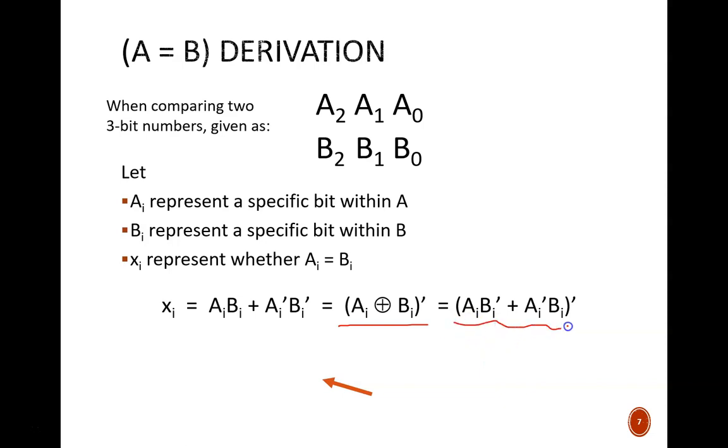But why care about defining X at all? Well, even though X is an intermediate variable and not part of our inputs or outputs, it is useful for simplifying our discussion and our circuit. The equation that determines whether A equals B overall can be written as X2 and X1 and X0. This shows us clearly that every corresponding bit must match in order for the overall numbers to be equivalent.